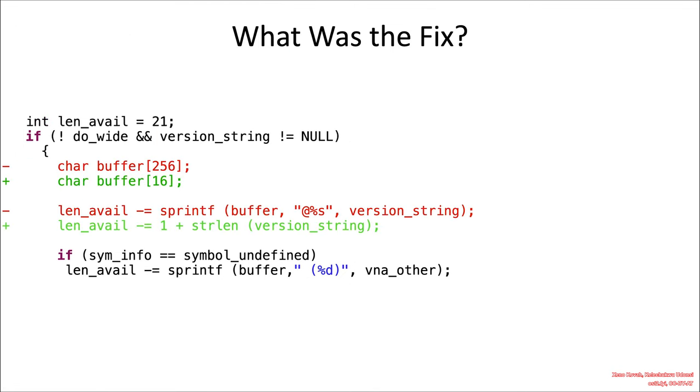So what was the fix for this? Well, if we look at the diffs, we can see they changed the buffer size down to only 16 bytes, and then they replaced the sprintf with a string length of the version string plus one to presumably add in the size of the null character, which is not included in a, not output by a string length, and then that's doing a minus equal on the length available.